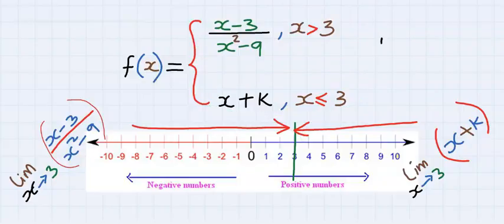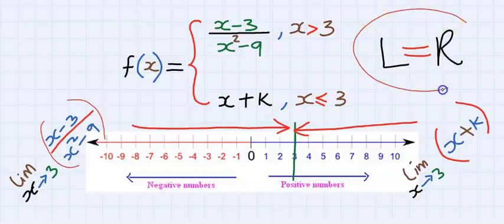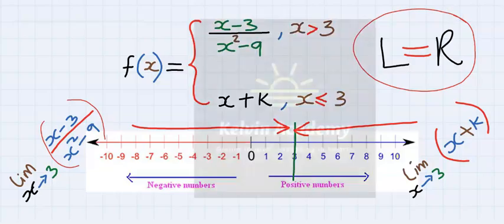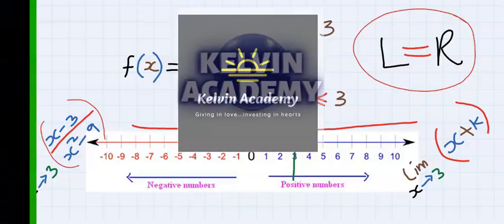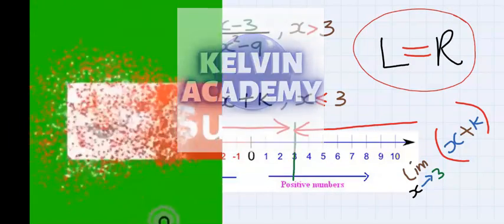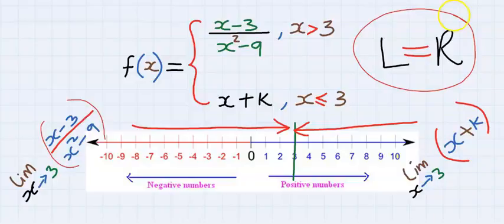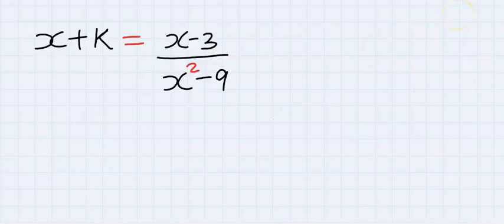Next, for the continuity of a function, the left hand limit must be equal to the right hand limit. This is a condition for the continuity of this function. Because of this condition, we are going to equate the upper part and the lower part.